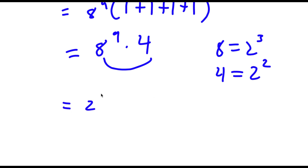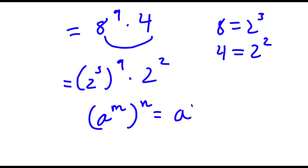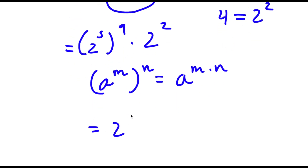So if I replace these two terms with 2 to the power of 3 and 2 to the power of 2, I get 2 to the power of 3, to the power of 9, times 2 to the power of 2. Now if I have something in the form a to the power of m to the power of n, this is the same thing as a to the power of m times n. So in this case, 2 to the power of 3 to the power of 9 equals 2 to the power of 3 times 9. Now I have this times 2 to the power of 2. Now 3 times 9 equals 27.